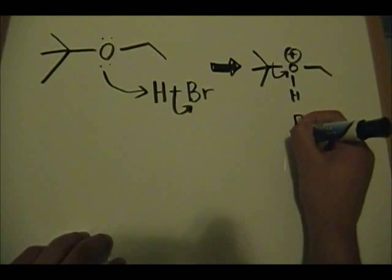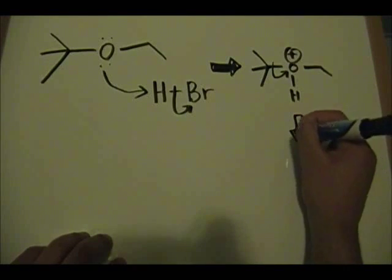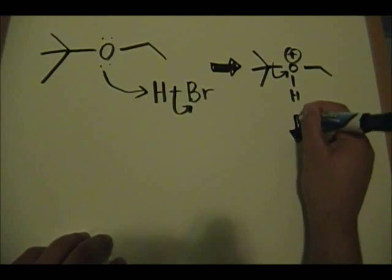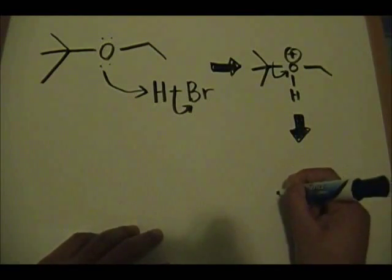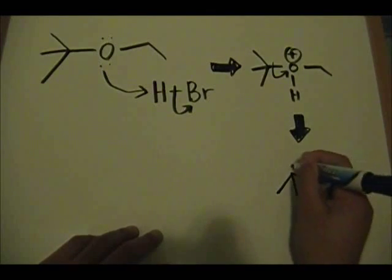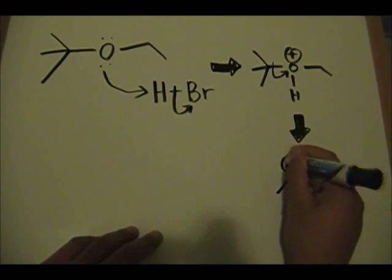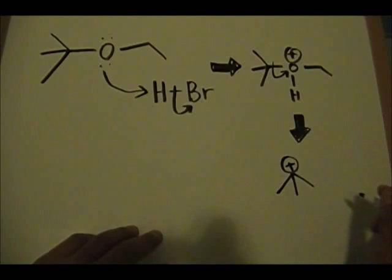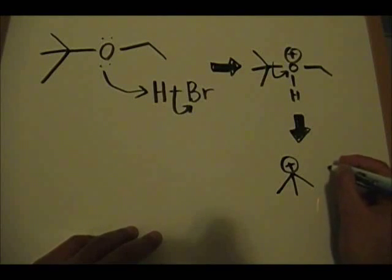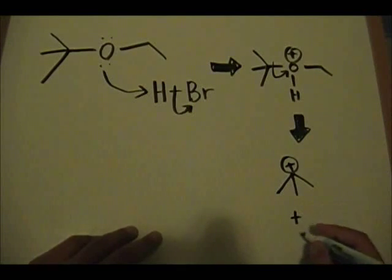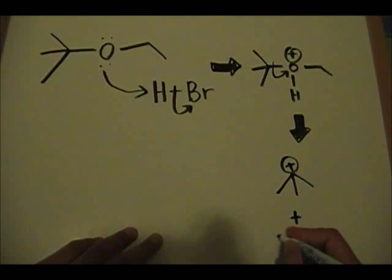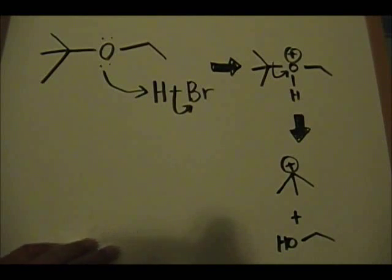So the product of this step is your tertiary carbocation intermediate plus you formed your alcohol which was primary. So you formed your primary alcohol.